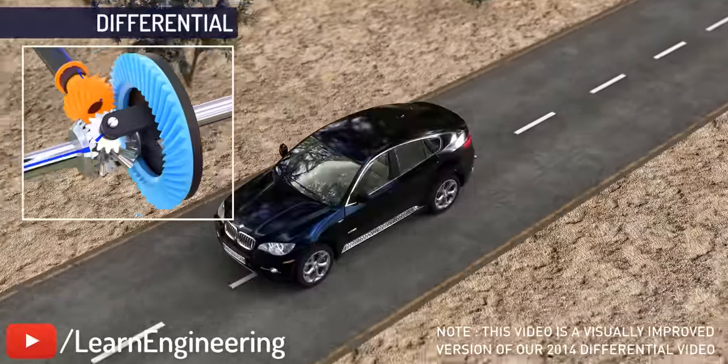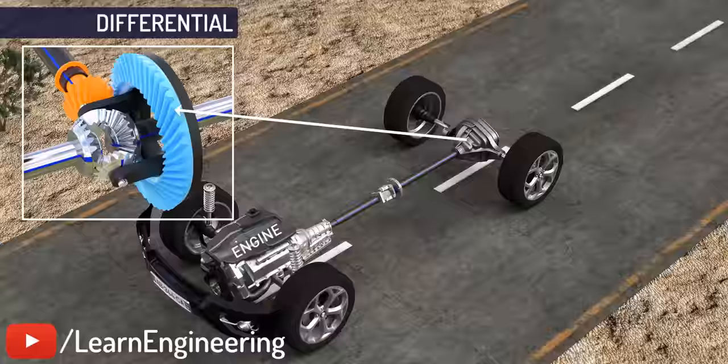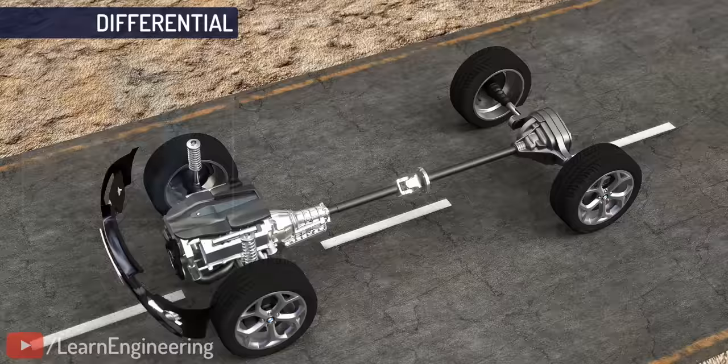The differential is an integral part of all four-wheelers. Wheels receive power from the engine via a drive shaft, and the main function of the differential is to allow these wheels to turn at different rpms while receiving power from the engine.